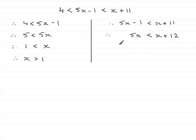Now subtract x from both sides, so 5x - x is 4x, and that's less than 12. If we divide both sides by 4, you don't have to reverse the inequality because you're dividing by a positive number. So 4x ÷ 4 is x, and 12 ÷ 4 is 3, so x < 3.